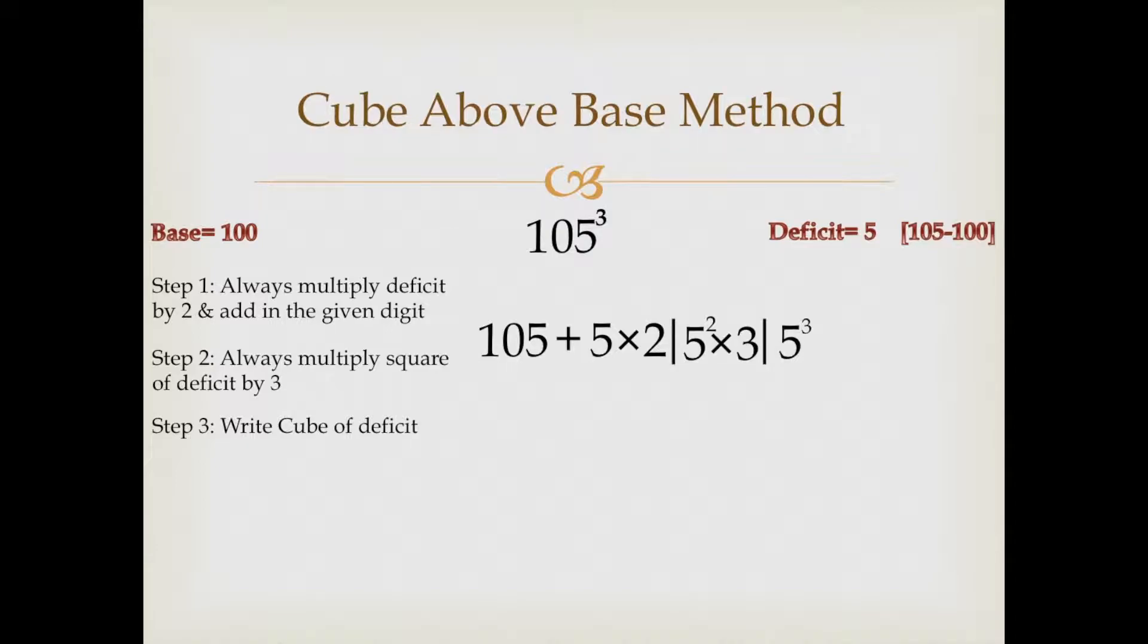Now solve this equation and we'll have the answer. 105 plus 10 would be 115. In the second step, it will become 75 because 5 square into 3 makes 75. In step number three, it will become 125, write 125.